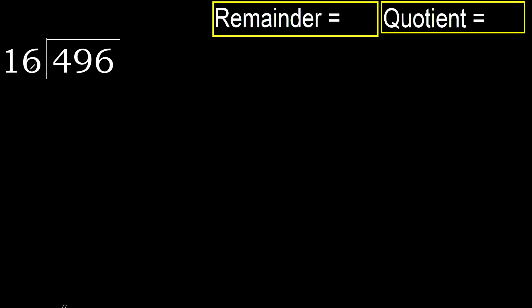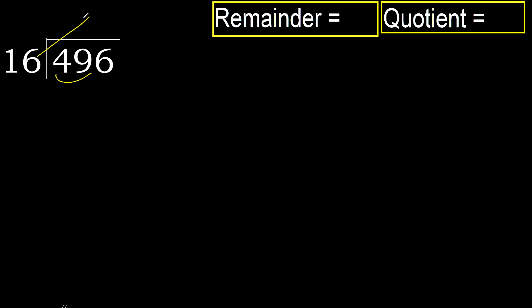496 divided by 16. 4 is less, therefore next. 49 is not less, therefore work with 49. 16 multiplied by which number is nearest to 49 but not greater?